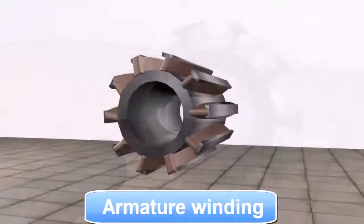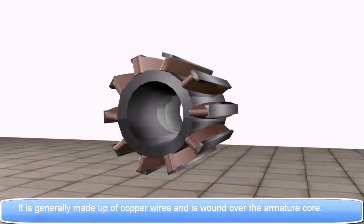Armature Winding: It is generally made up of copper wires and is wound over the armature core.